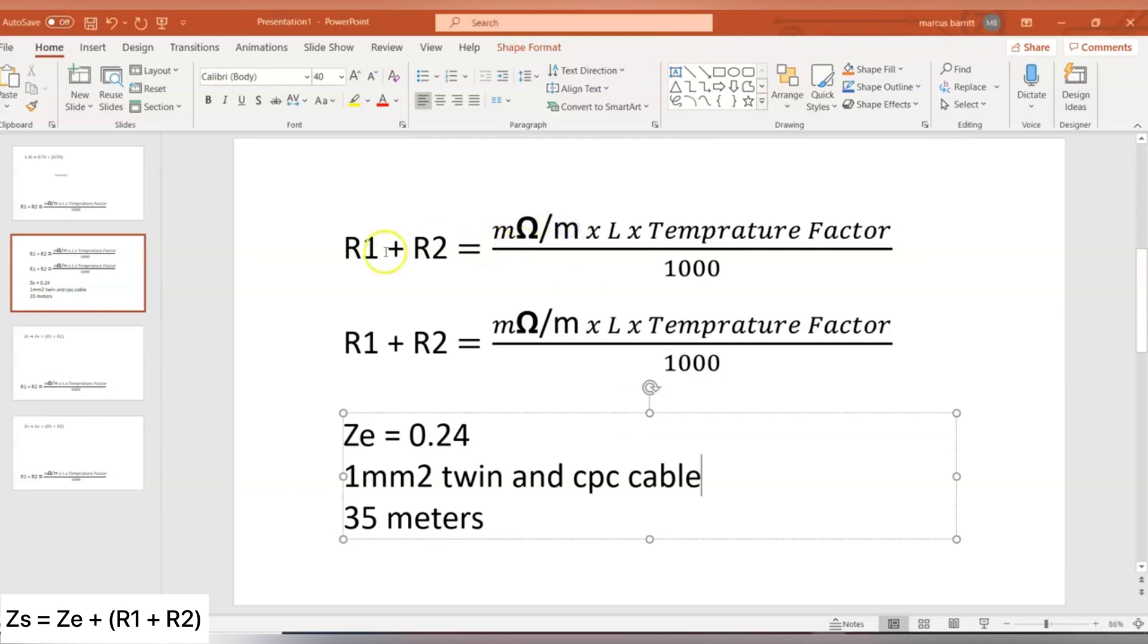So first of all, we come back to this calculation, remember R1 plus R2 equals—so line and CPC—the resistance value of our line and CPC circuit, think back to testing, equals milliohm per metre.